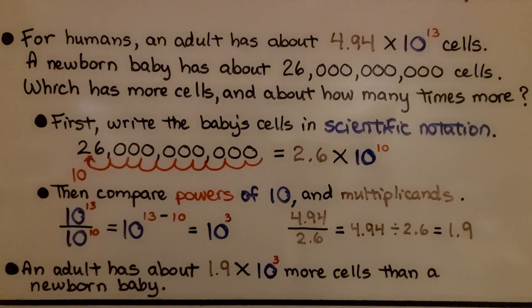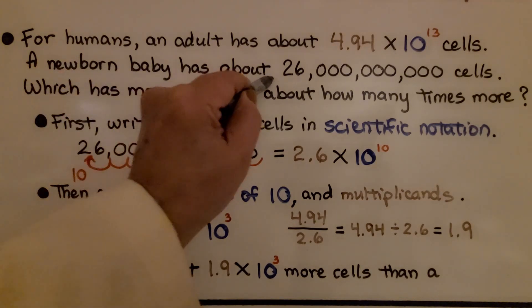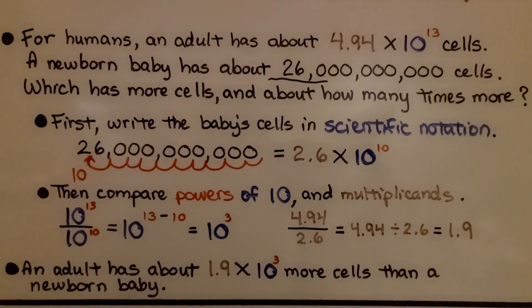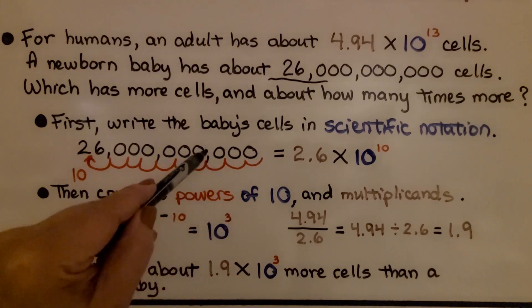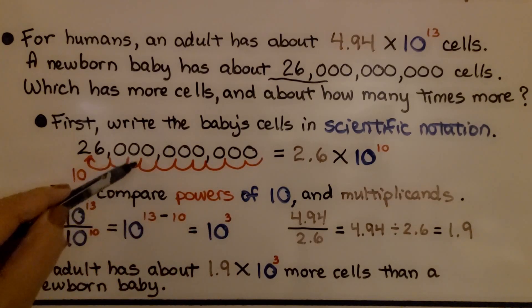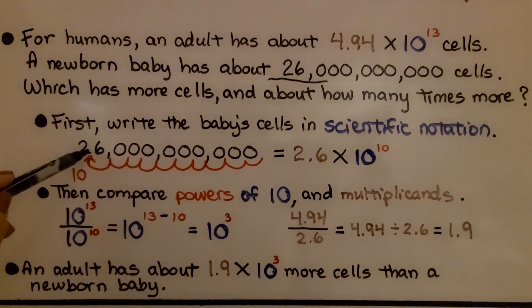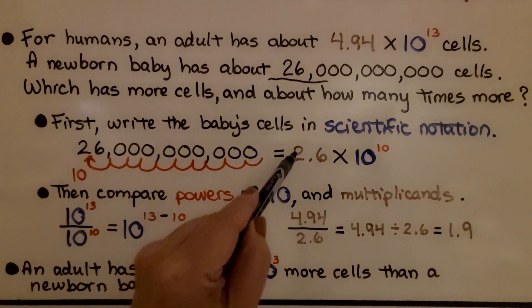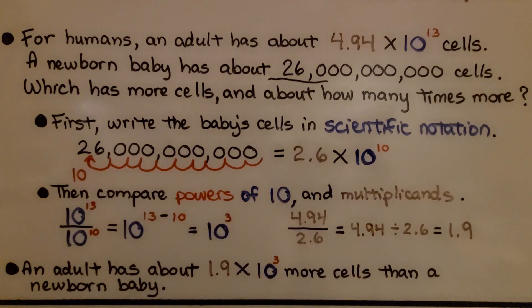For humans, an adult has about 4.94 times 10 to the 13th power cells. A newborn baby has about 26 billion cells. Which has more cells, and about how many times more? First, we write the baby's cells in scientific notation. We count 10 hops, so we get 2.6 times 10 to the 10th power.